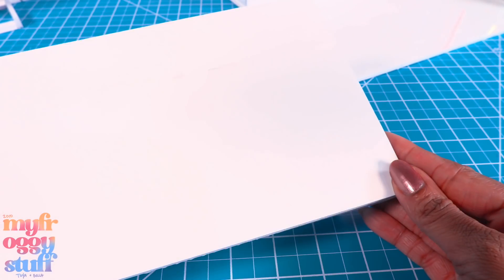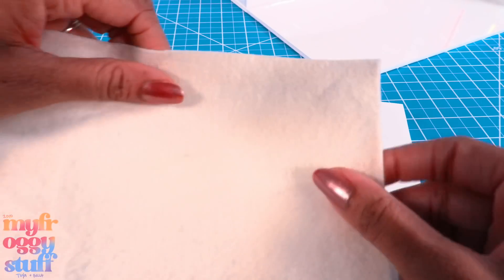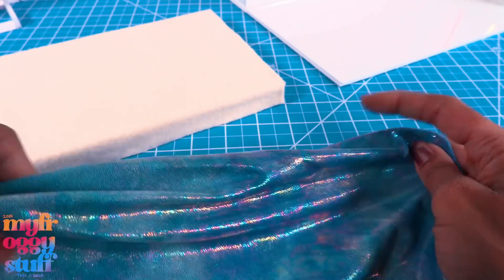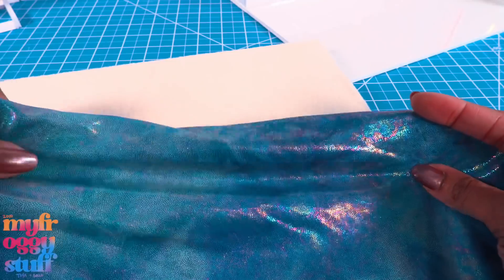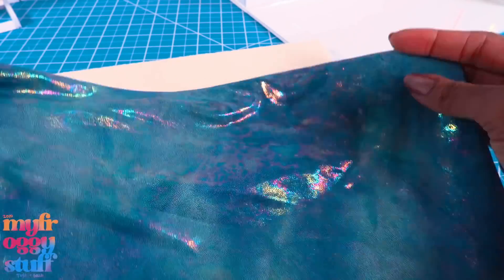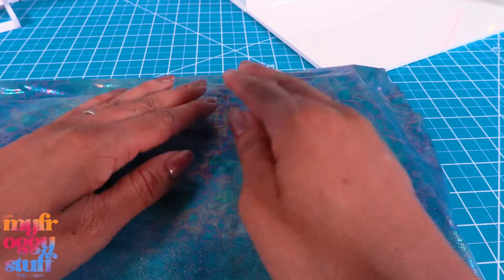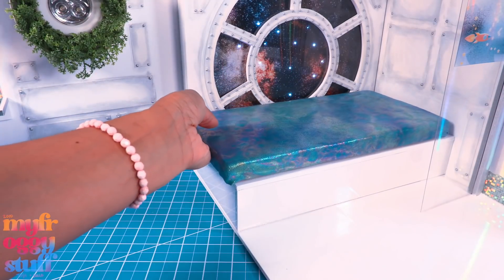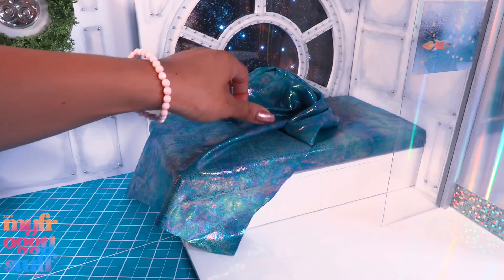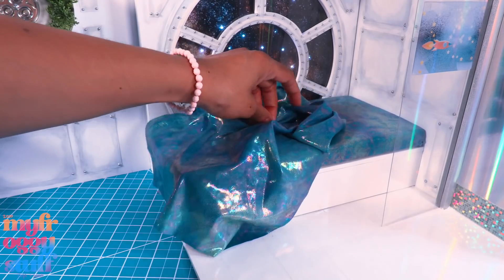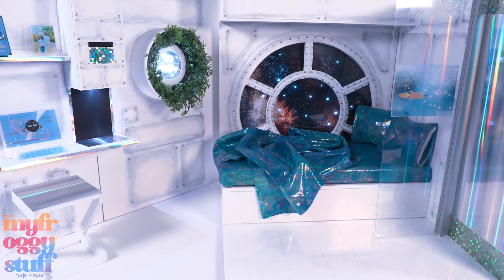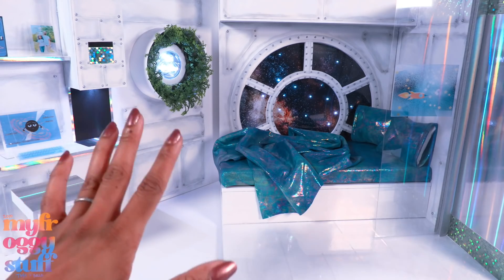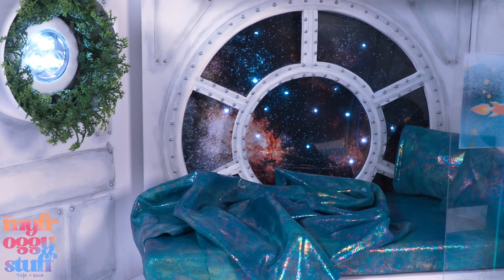With my last few scraps of foam board I made a small platform. I glue on a layer of felt. I found some leftover shiny fabric from a mermaid tail I made years ago and we're gonna use it to cover the platform, gluing it underneath to make a mattress. I cut another piece of fabric to drape on the bed so the room looks lived in. Add some pillows and our sci-fi room is complete.